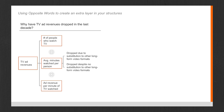Maybe people are watching less TV because they're watching short video formats like Snapchat or Instagram Stories — which is 'despite no substitution' because it's a different format — or maybe they're doing other things like studying, reading books, or hanging out with their families. We can also break down ad revenue per minute of TV watched as having dropped due to an increase in supply of ad slots or a decrease in demand for ad slots. Maybe there are more channels now creating more supply, or maybe demand has decreased.